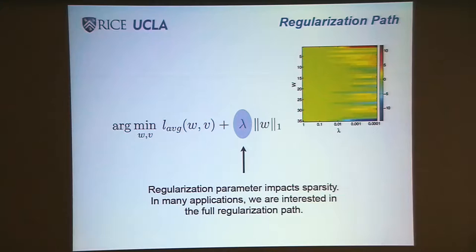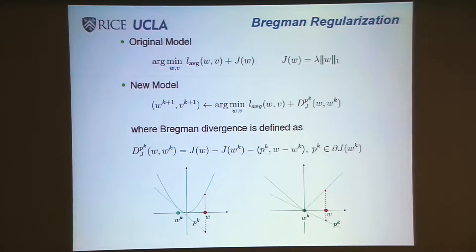You minimize over W and V plus lambda times the L1 norm of W. The regularization parameter impacts the sparsity. In many applications, you want to know the result for a whole sequence of lambdas. It gets harder and harder as lambda gets smaller. We're going to get rid of that nasty problem by doing the stuff I talked about with linearized Bregman. And I want people to use it.